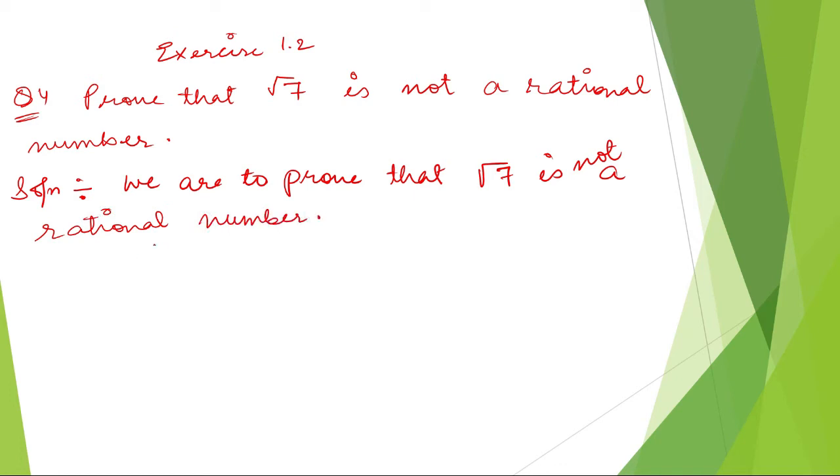So, let us assume that root 7 is a rational number.